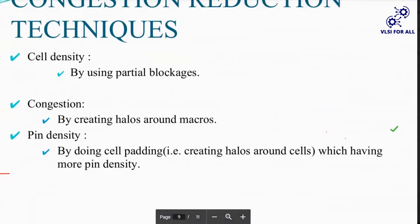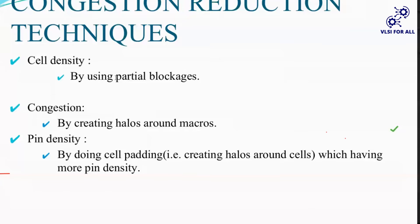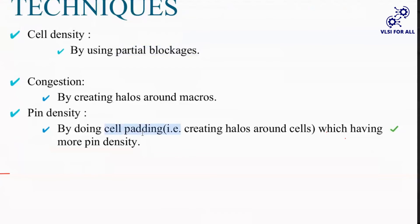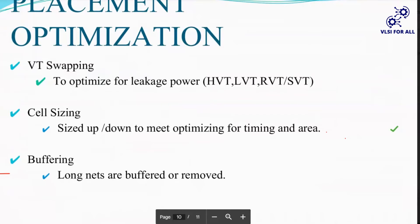To resolve congestion, we need to find where we are facing the issues. If there is routing congestion between macros, we create halos around the macros to resolve it. If there is a cell density issue in a particular region, we create partial blockages — there are density-screening partial blockages and normal partial blockages. For pin density issues, we can use cell padding, creating keep-out margins in the X and Y directions, left/right or top/bottom, to resolve the pin density issue. If there are timing violations, we need to do optimization in the placement stage.